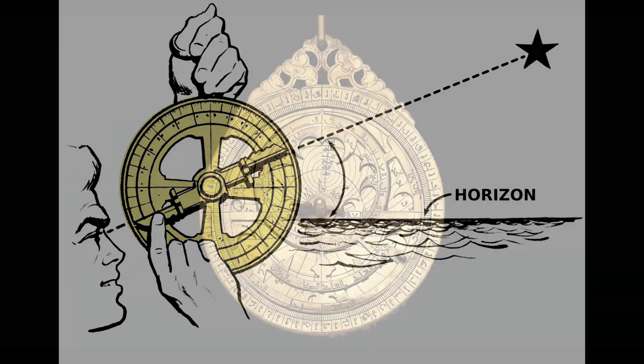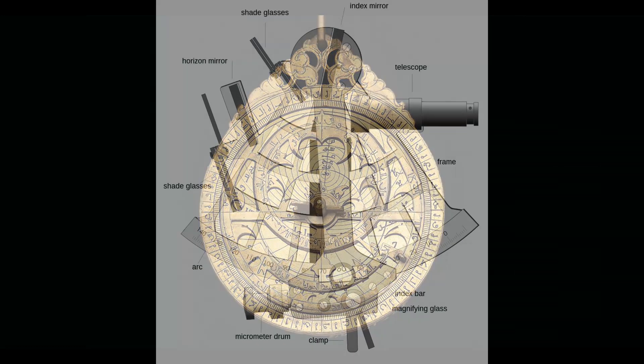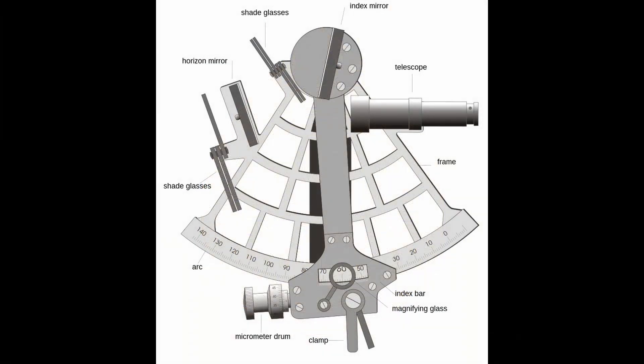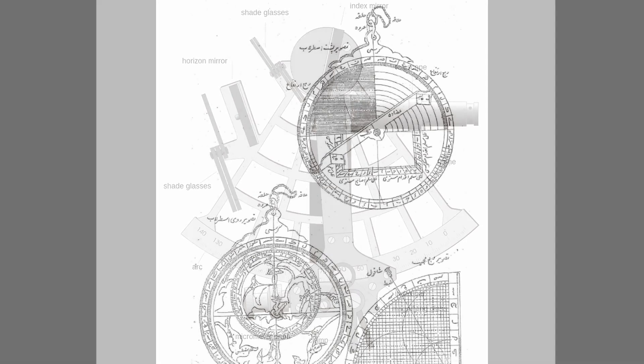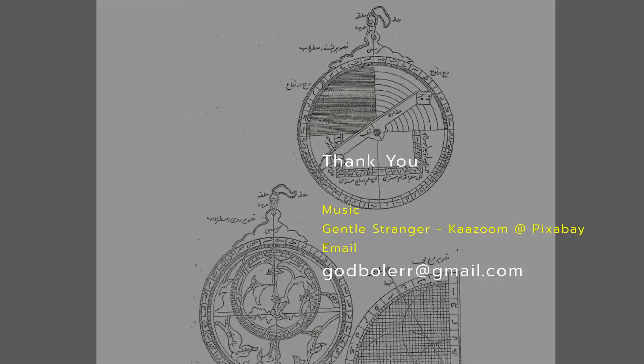The astrolabe and sextant are some of the instruments which can be used to measure the altitude of the sun as well. We will learn about these in the next video. Thank you.